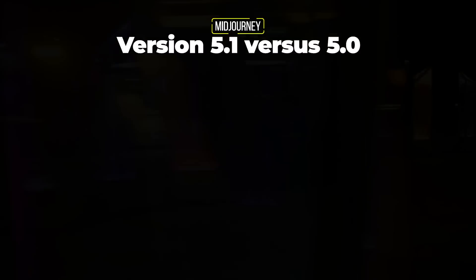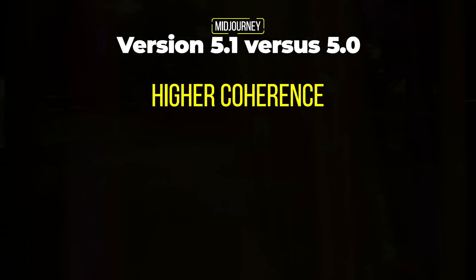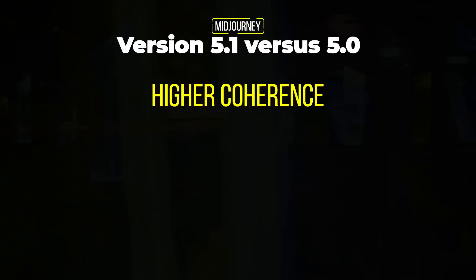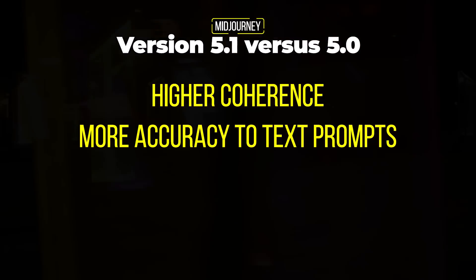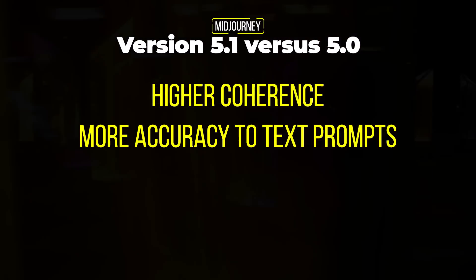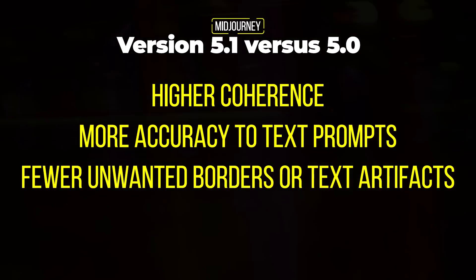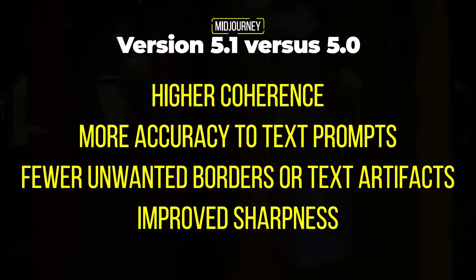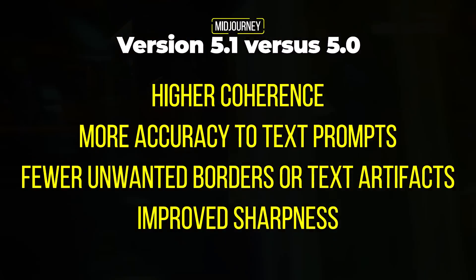So what's the difference between 5.1 and 5? There's higher coherence, meaning it performs better according to what you're putting in — you get images closer to what you're looking for with higher accuracy to text prompts. There are also fewer unwanted borders and text artifacts, so less weird bits and pieces floating around your images. It also improves sharpness, so things are less blurry and you get better quality images overall.